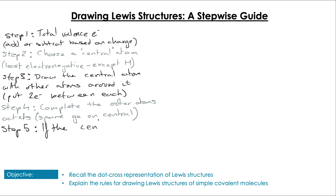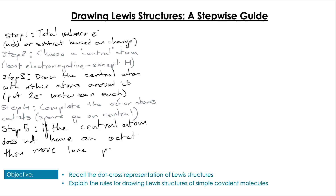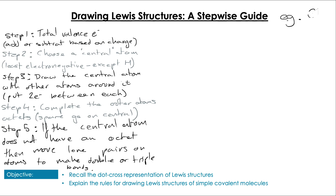Step four: we fill in the lone pairs on the outer atoms. Lastly, step five: if the central atom does not have a complete octet once we've done this process, we're going to move — for want of a better word — the lone pairs on the outer atoms to make double or triple bonds.